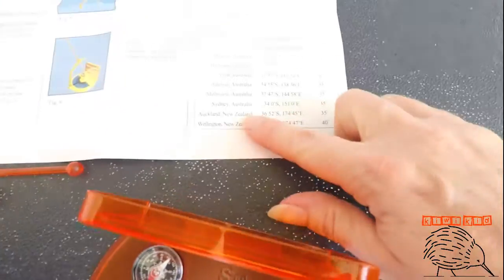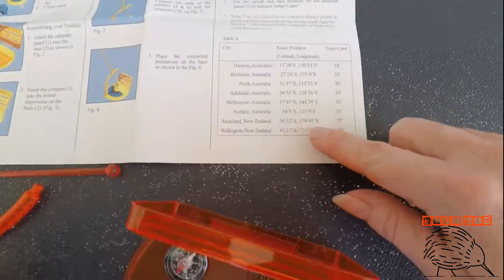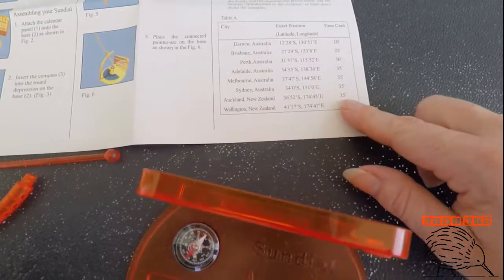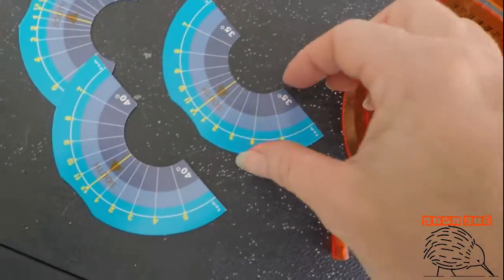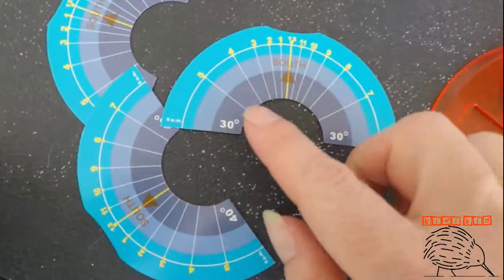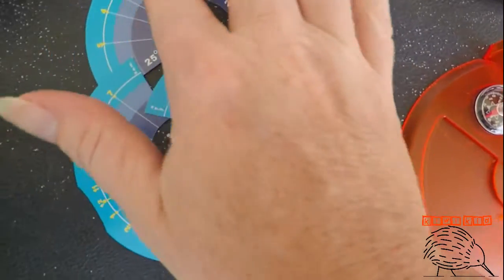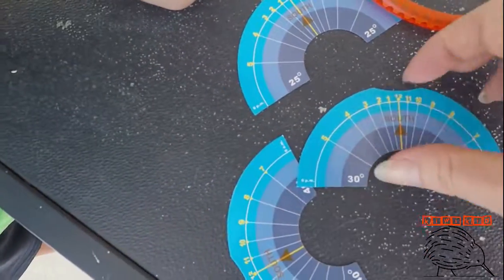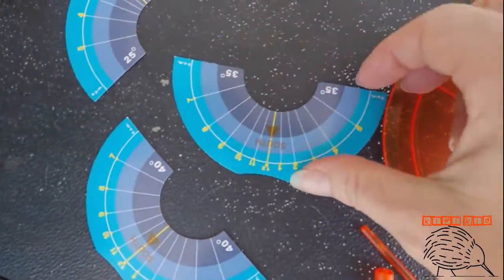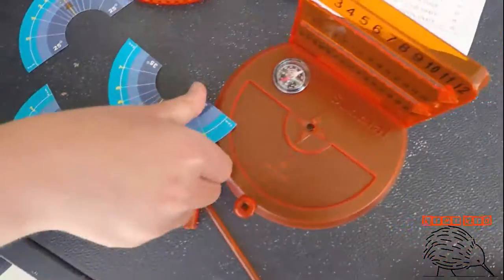Now because we're in Auckland, New Zealand, the time card we need is number 35. These ones have all got different numbers on them, so we're looking for number 35. Here we go, do you want to put that one in?